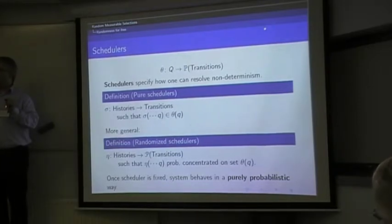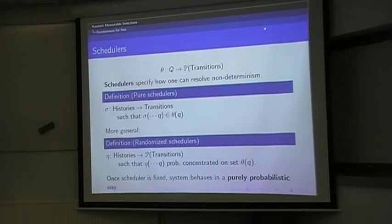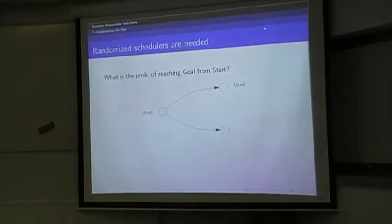Formally, a randomized scheduler is not one transition, it doesn't give you one transition, it gives you a probability measure on the set of possible transitions. Formally, it means that eta, a randomized scheduler, should return you a probability measure that's concentrated on the set theta of Q. That is, the probability of being inside theta of Q should be one. Whether you use pure schedulers or randomized schedulers, it gives you a way of resolving non-determinism, and then you get a purely random probabilistic system, once the schedule is fixed.